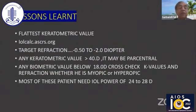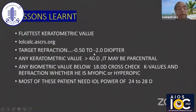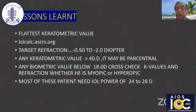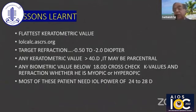Lessons learned: take the flattest keratometric value. Use the IOL calc ASCRS. Target refraction of minus 0.5 to minus 2 diopters. Any keratometric value above 40 diopters may be paracentral. Any biometric IOL power below 18 diopters — cross-check the K values. Unless the refraction is myopic, the IOL power should be in the range of 26–28 diopters. Most of these patients need an IOL between 24 and 28 diopters because most will have 3–4 diopters of hyperopic shift. If any value comes in less, unless there are only 4–6 incisions and the patient is still myopic, you can proceed with it.